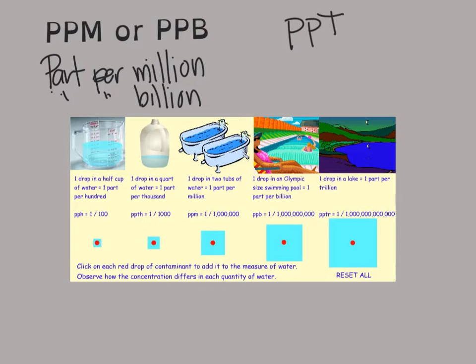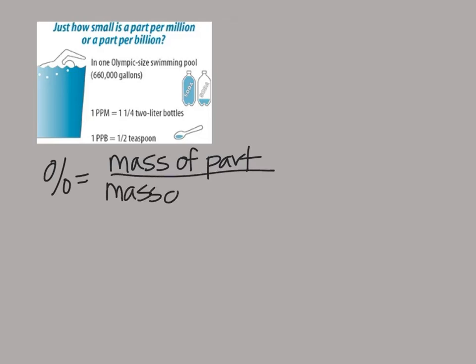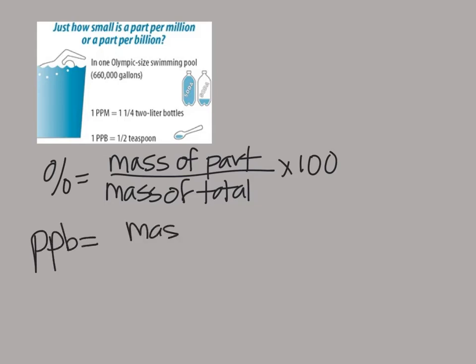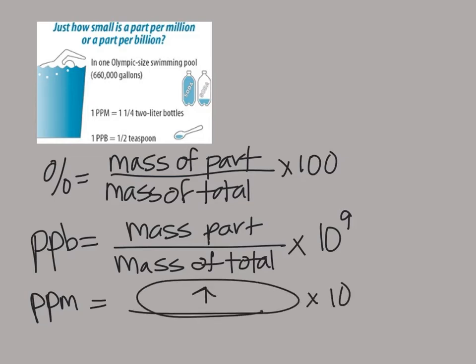They're all found or solved in the same process based on percent by mass. Percent by mass was the mass of the part that you're looking for divided by the mass of the total. In the percent case, you multiply by 100. So if you're doing parts per billion, you're going to take the mass of the part divided by the mass of the total and multiply by a billion, so 10 to the ninth. If we were doing parts per million, it's the same thing times 10 to the sixth.